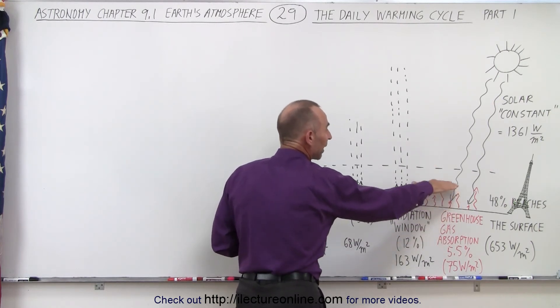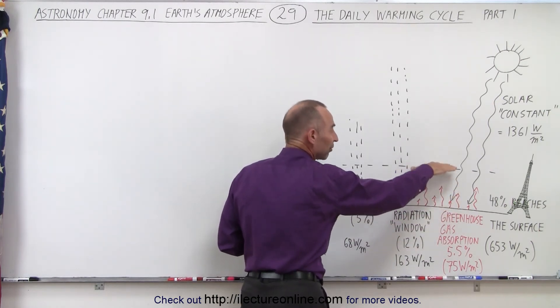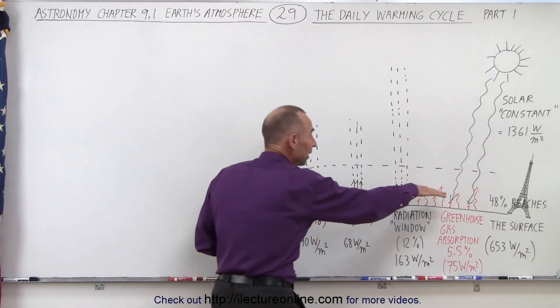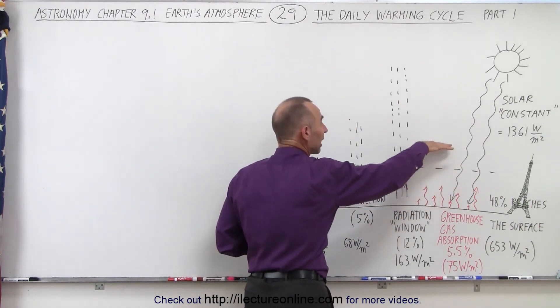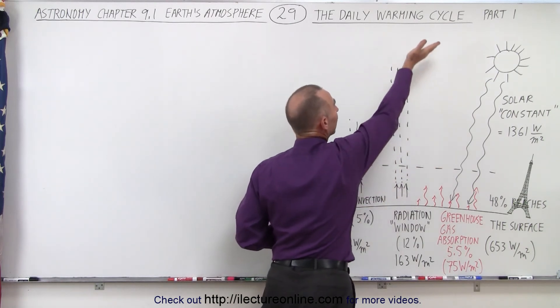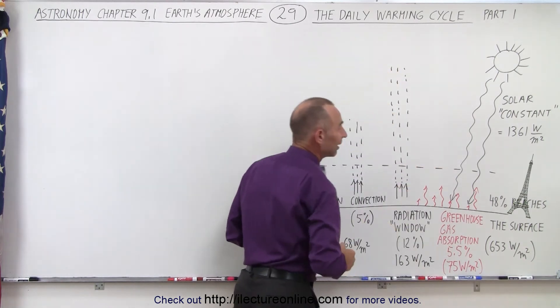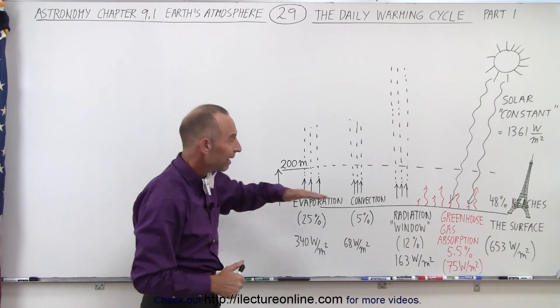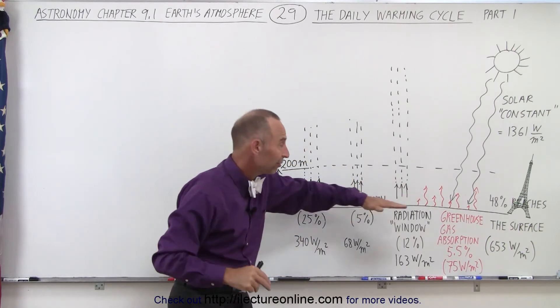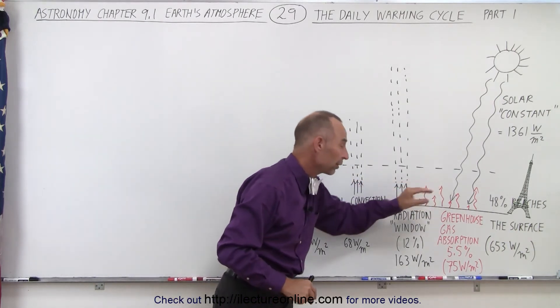That slowly makes it up into the atmosphere and then eventually will again reach space and emit that energy into space. It's the delay factor, which is what we call the greenhouse effect, that makes it nice and warm near the surface of the Earth.